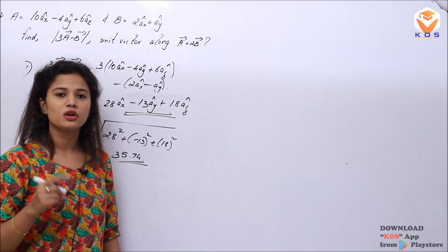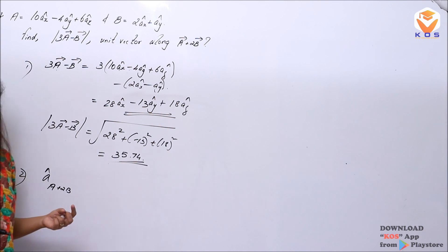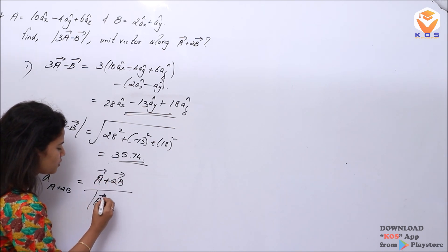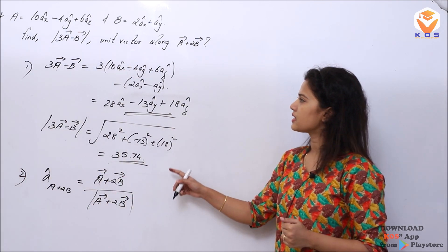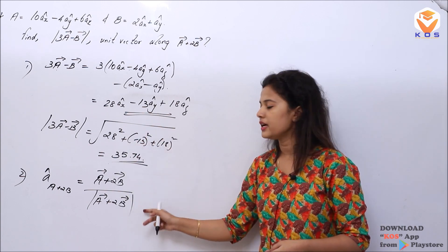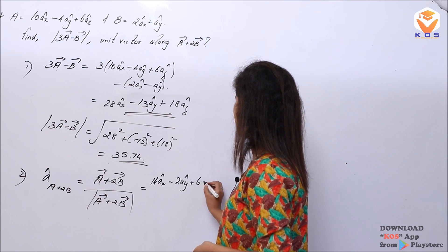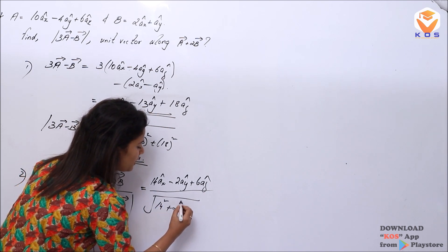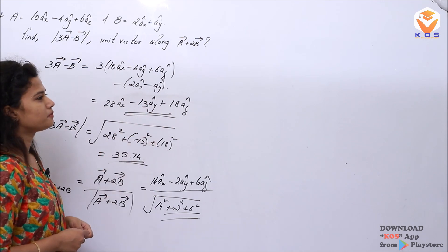To find the unit vector along A + 2B: first calculate A + 2B, then divide by its corresponding magnitude. A + 2B = 14AX̂ − 2AŶ + 6AẐ. Divide by √(14² + 2² + 6²) to get the unit vector: approximately 0.9114AX̂ − ... This is vector multiplication and we are doing this example.